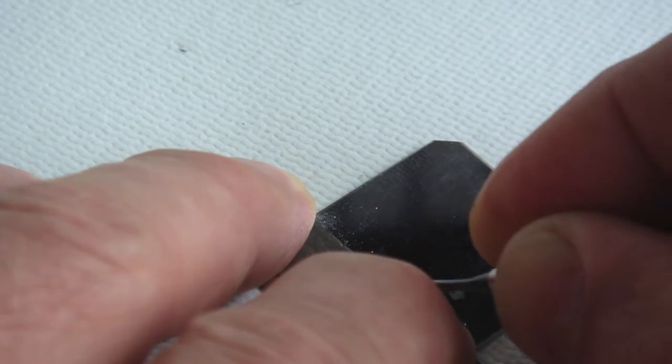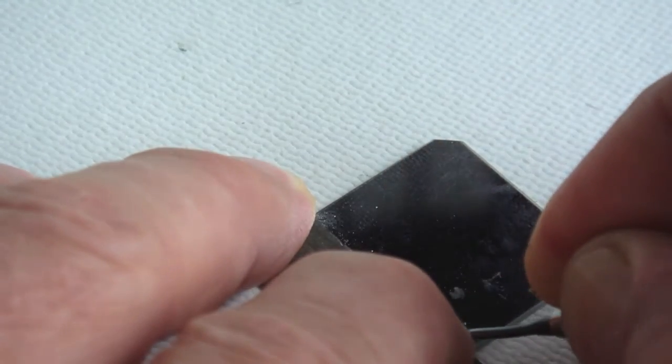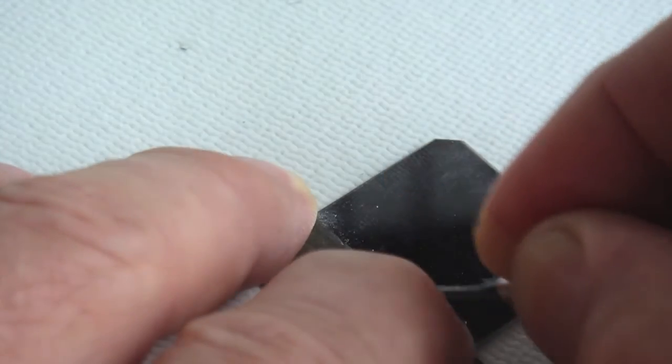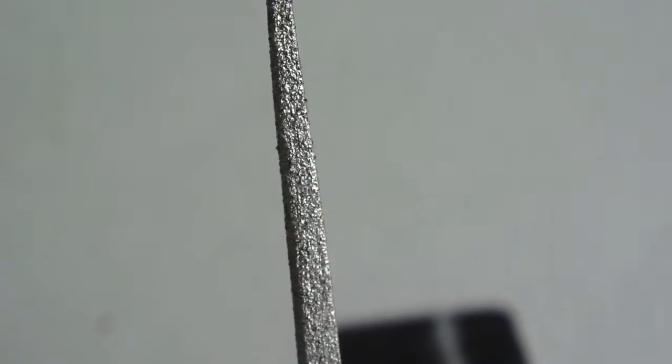Some might equate this to running your fingers down a chalkboard. Maybe to others, no worries. Either way, it needs to be done. Although it creates a wider scribe mark, a diamond impregnated file will also work. Simply use the corner of the file to cut your scribe.